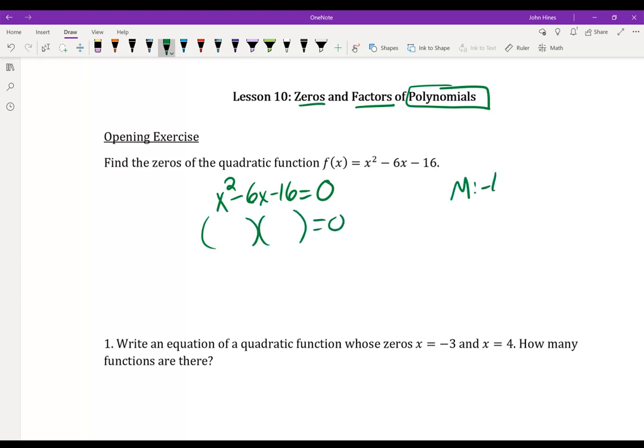What multiplies to negative 16 that adds to negative 6? So what multiplies to 16? 1 and 16, 2 and 8. There we go. That's how I'm going to get negative 6.